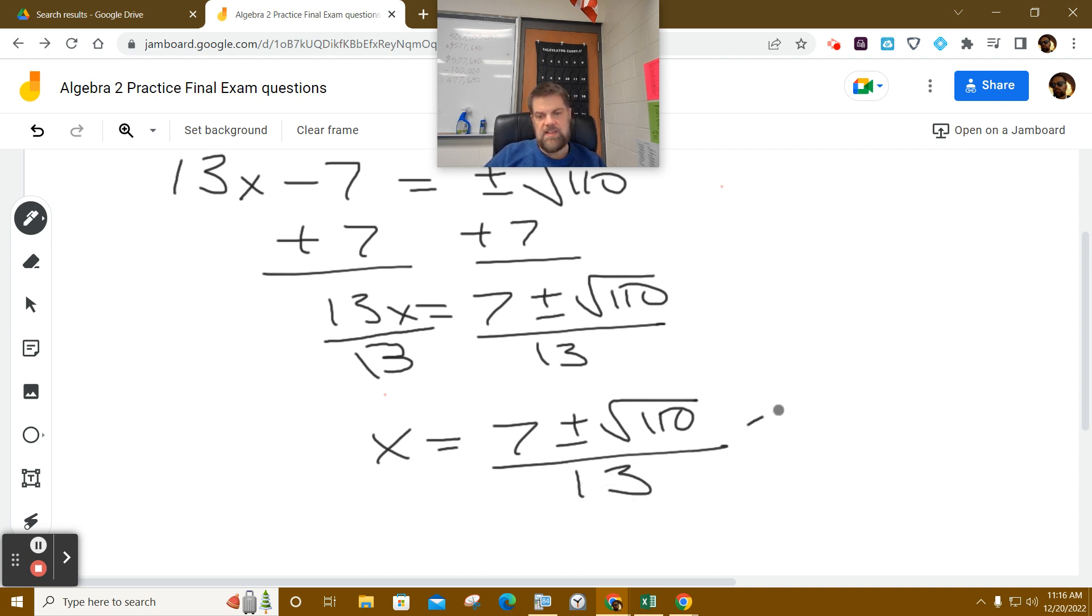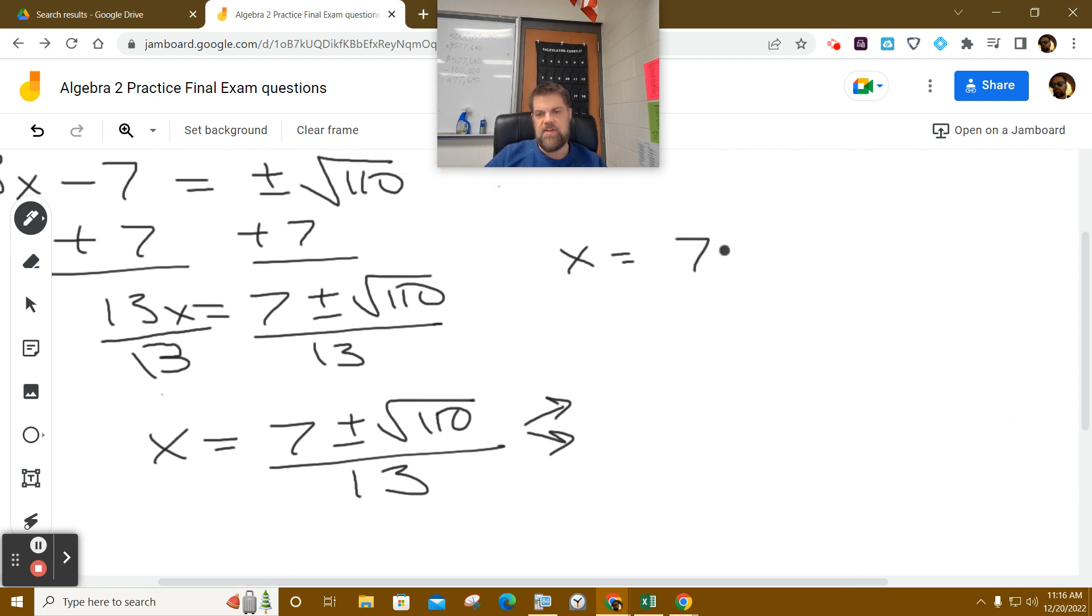And that gets separated to the plus or minus part. So, you could say x equals 7 plus the square root of 110 all over 13, or x equals 7 minus the square root of 110 all over 13.